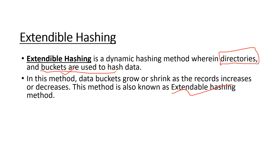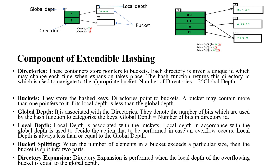Now we'll see what is extendable hashing. Extendable hashing is a dynamic method where the directory and buckets are used. In the directory, the directory will store a unique ID — we can say a pointer — and the directory is pointing to the bucket. In the bucket we can store the elements. The components of extendable hashing are: directory, bucket, global depth, local depth, bucket splitting, and directory expansion.